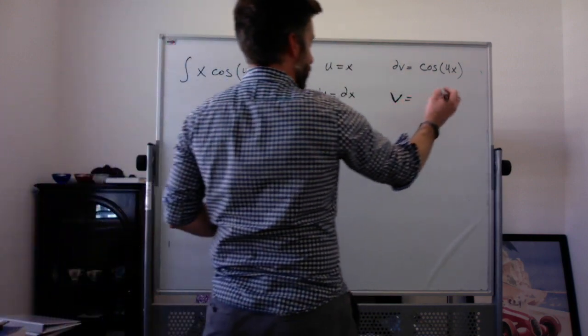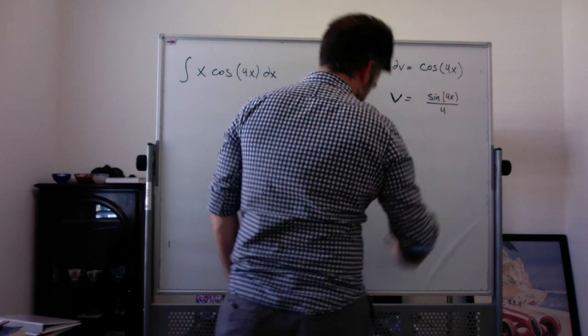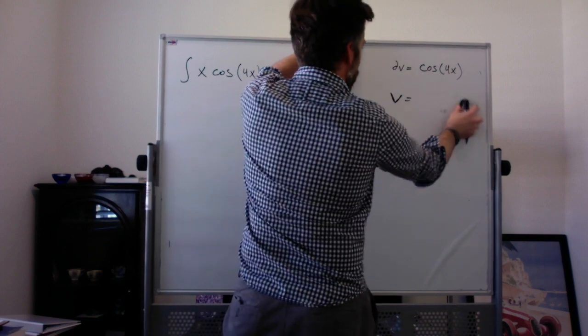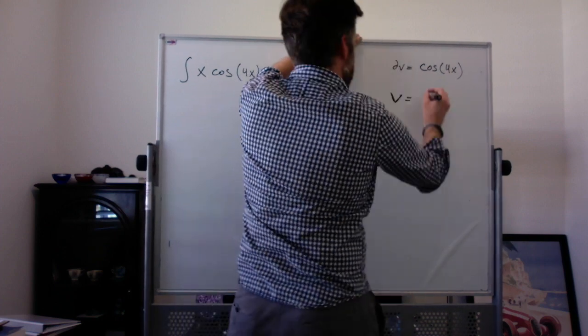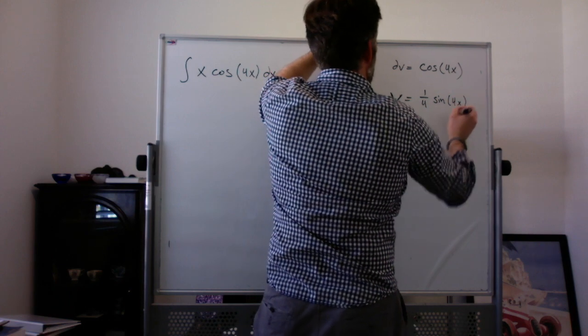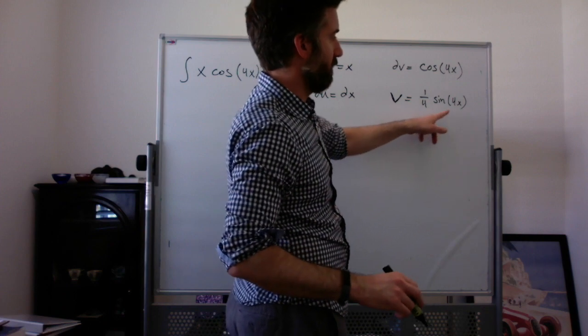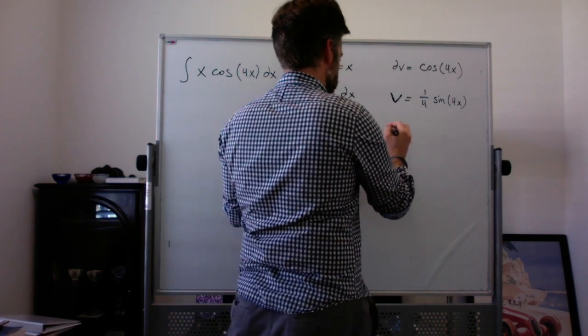And my anti-derivative here is, you can say it's sine of 4x all over 4, or you might prefer to say it's 1 fourth times sine of 4x. I kind of like writing it the first way. But the whole reason here is because if you take the derivative of this, the derivative of 1 fourth times sine of 4x, you take the dv/dx.